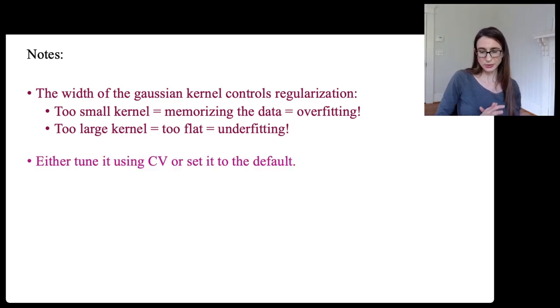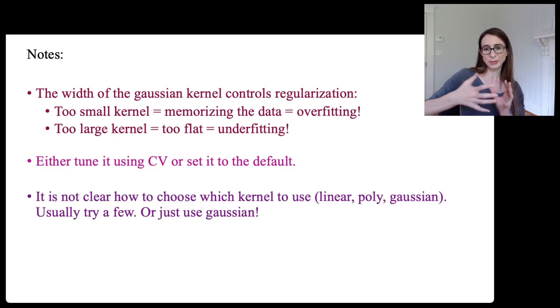All right, so the way you set that kernel parameter is usually to tune it using cross-validation or you could set it to the default value which is set nicely so that it generally performs well using the default. And the default is just scaled based on sort of the knowledge of the data and how it's, just the scaling of the data in the space. And you're probably wondering, well, which kernel should I use? And the answer is it's really not clear because you don't know in advance how you should model the data, right? You just know that the data come IID from some unknown distribution. You don't know anything about it. So you don't know whether a linear kernel, polynomial kernel, or Gaussian kernel is going to perform the best or you can even design your own kernel if you like. So usually people just try a few of them or you could do what I do and just go straight to Gaussian kernels because I like them. Up to you.